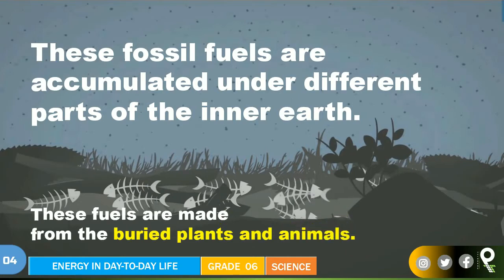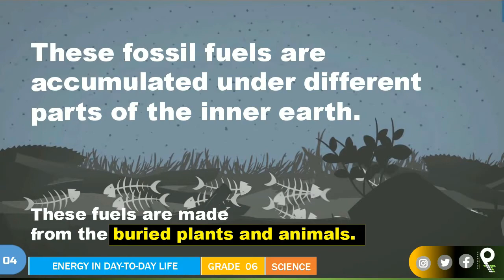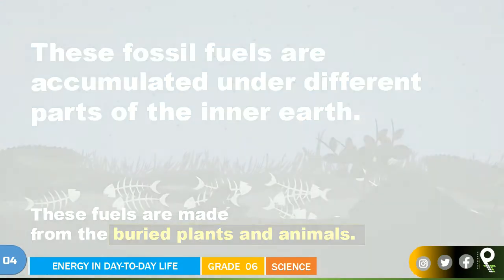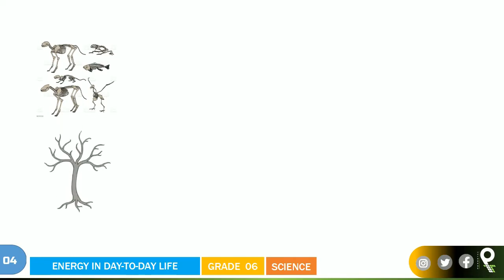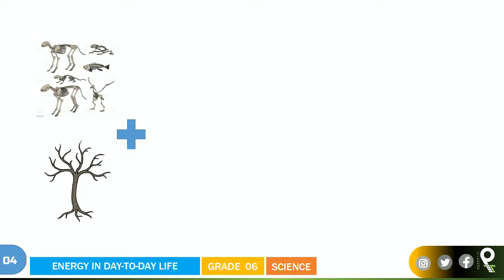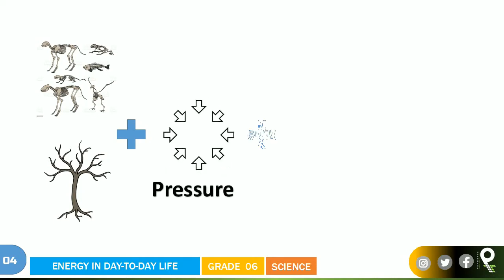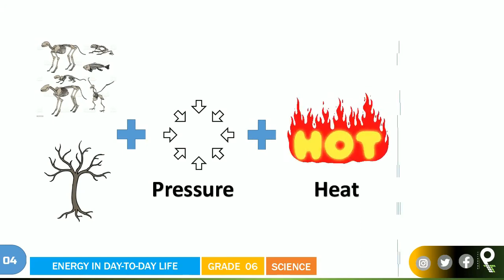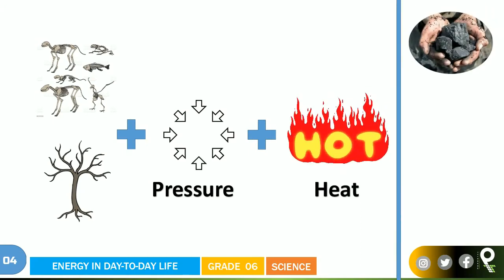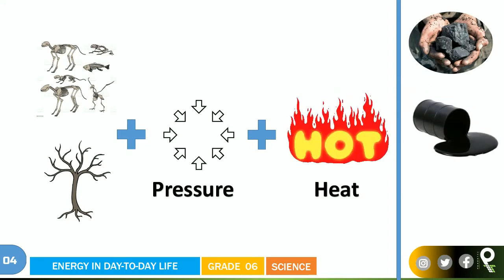These fossil fuels are made from the buried plants and animals. The buried plants and animals become the fossil fuel. These skeletons or bones of the dead animals and dead plants, when they come under pressure and heat, after long, long years, the coal is made, the petroleum oil and the petroleum gas — these are made.